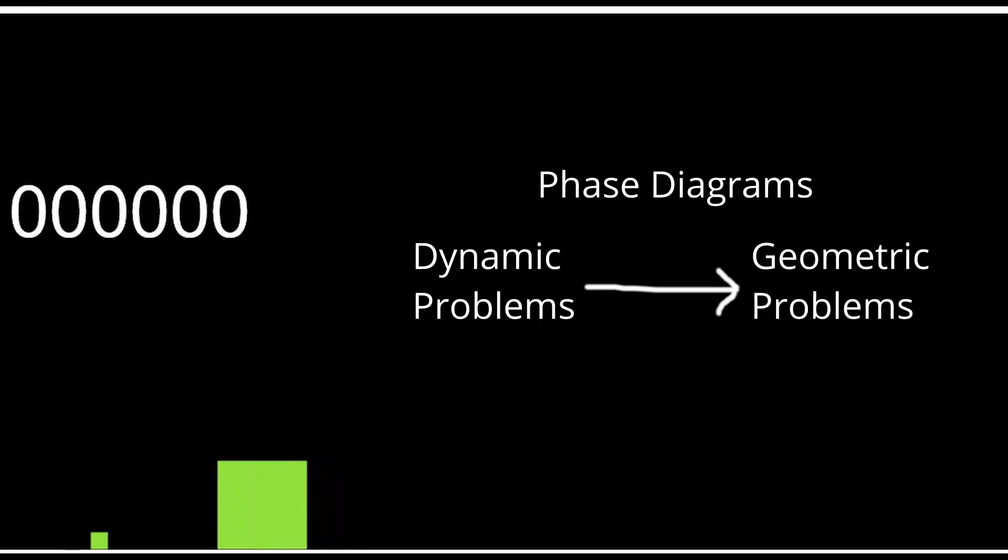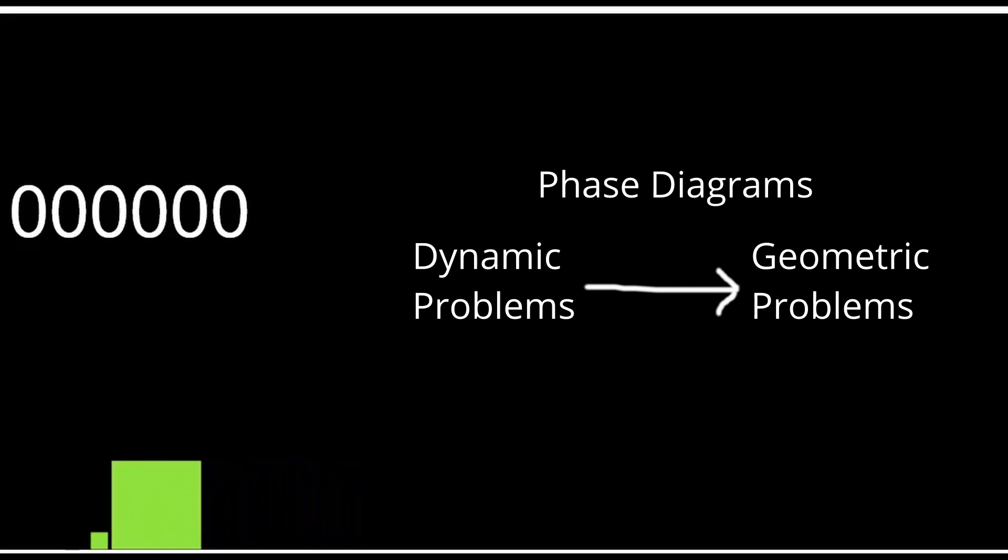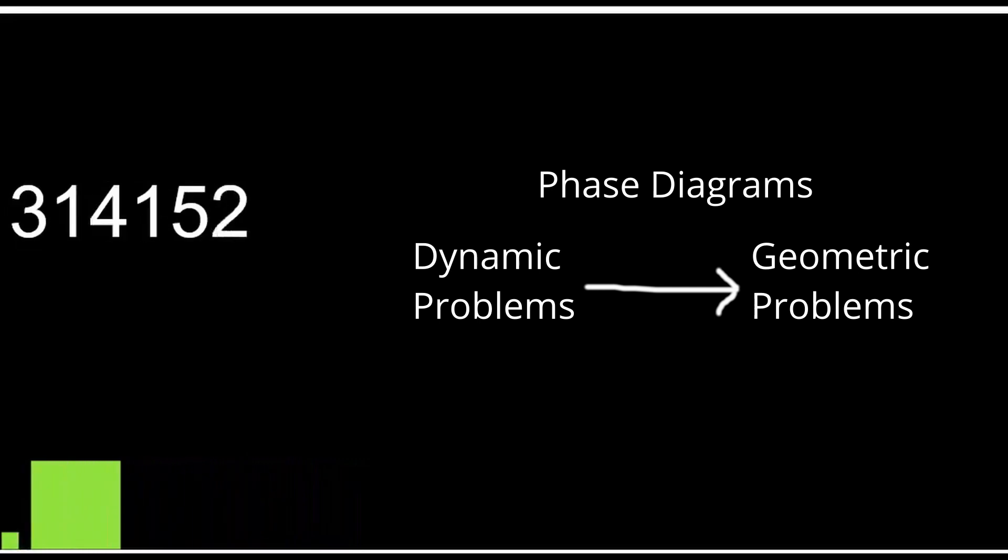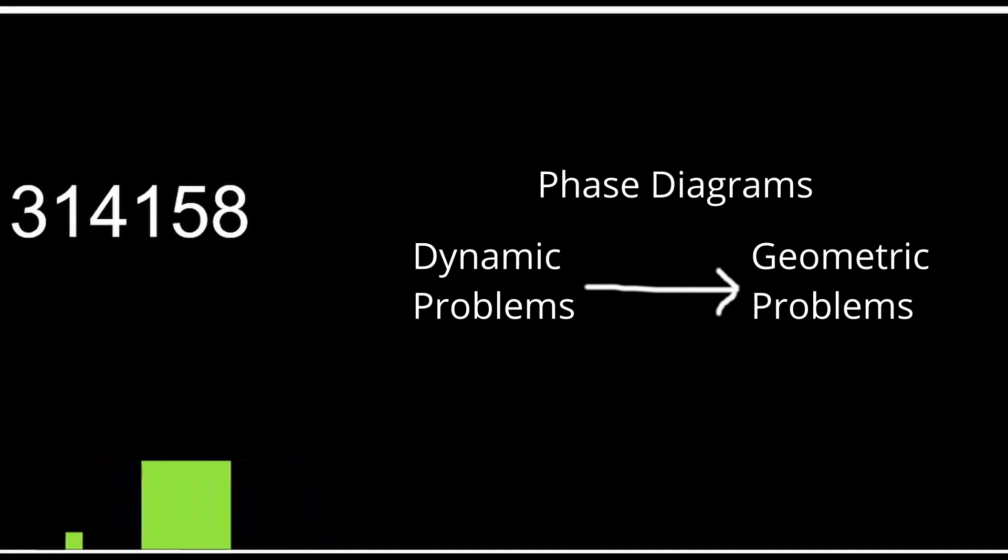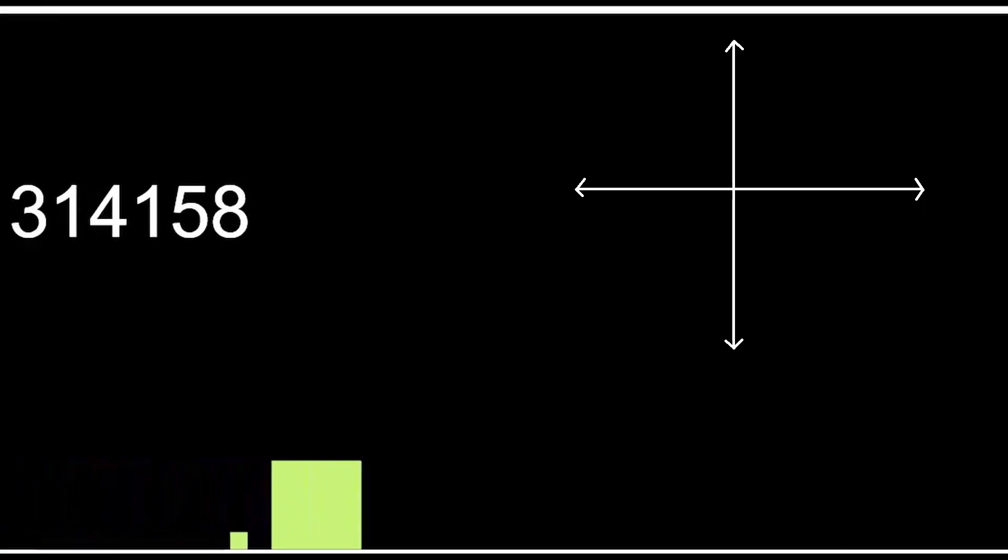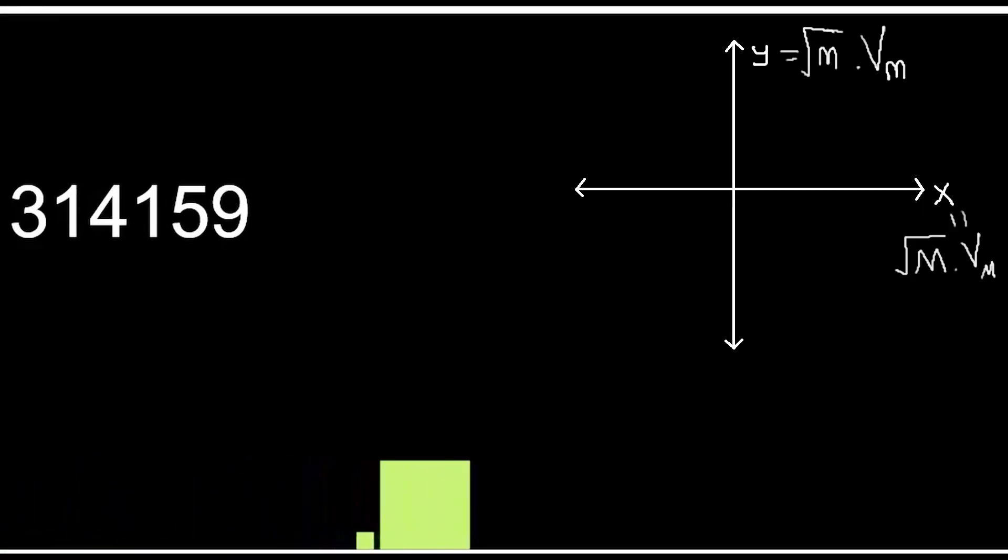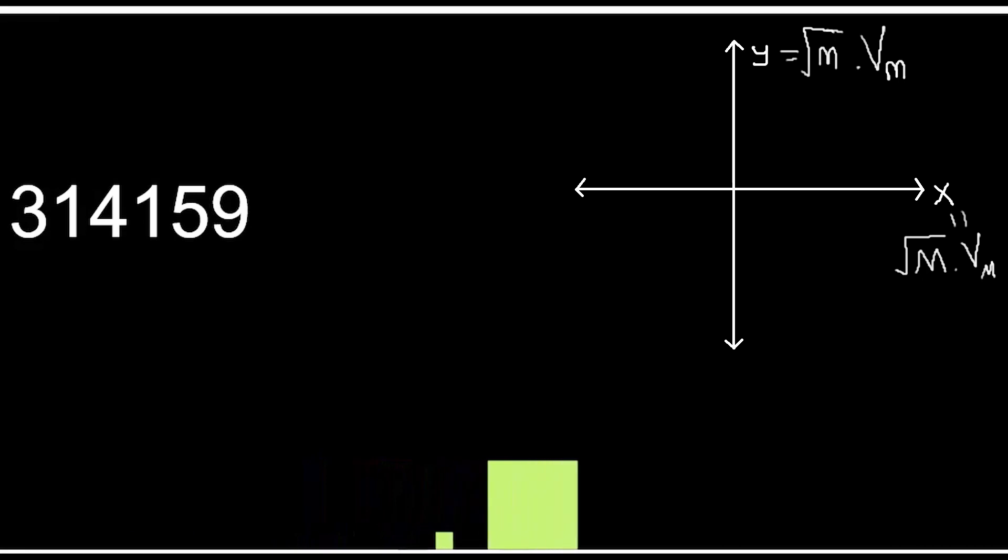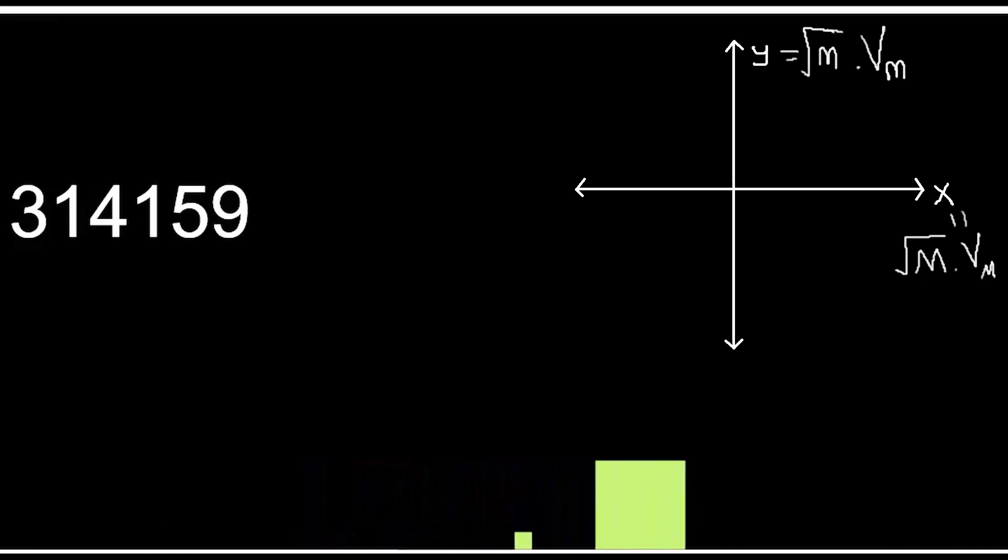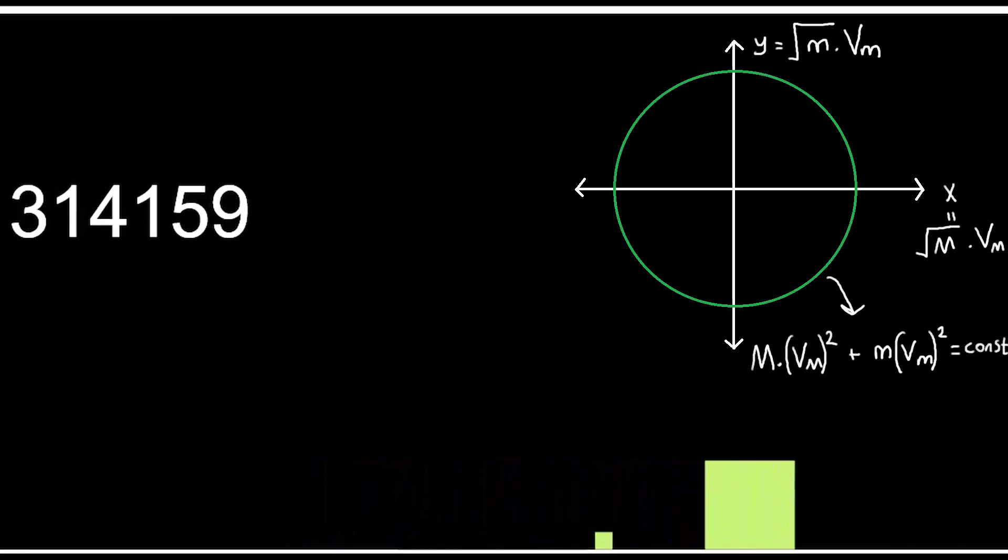Let's convert this dynamic problem to a geometry problem to visualize and understand the collisions better. Creating an analytical plane, we can figure out the relation between the speeds of the squares. Naming our x and y axes like these, we can form a perfect circle with our energy equation. If there's a circle, then there's a pi.